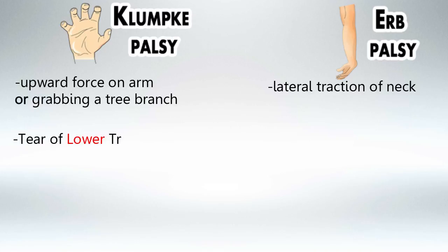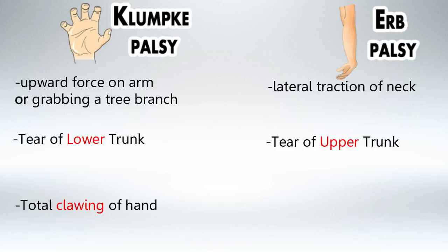Klumpke Palsy is caused by damage to the lower trunk of the brachial plexus, and Erb Palsy is caused by damage to the upper trunk of the brachial plexus. The presentation of Klumpke Palsy is total clawing of the hand, and the presentation of Erb Palsy is waiter's tip arm.